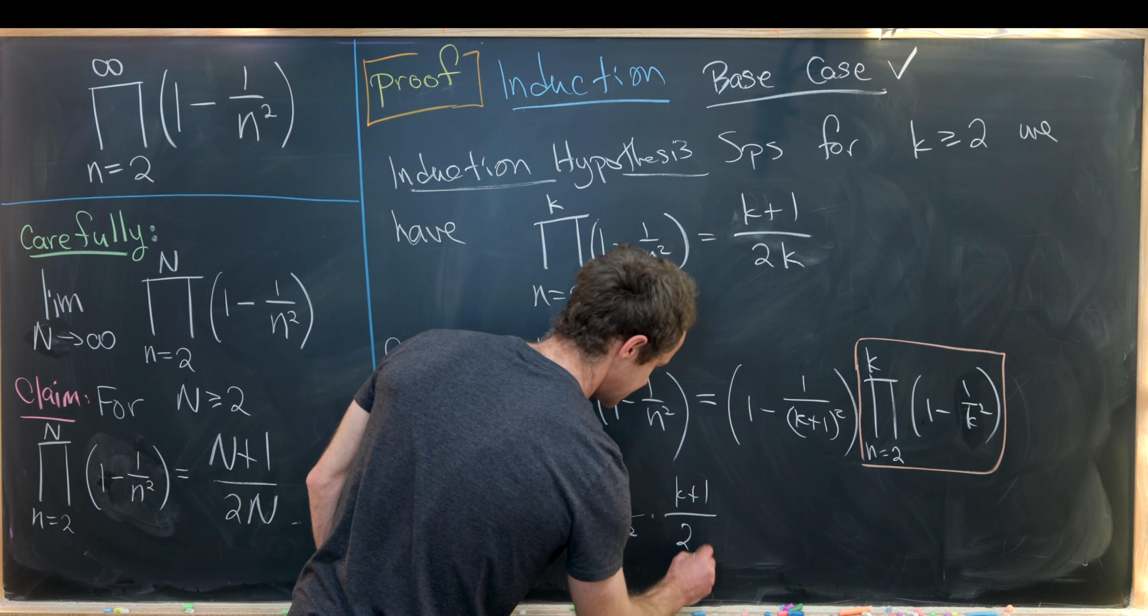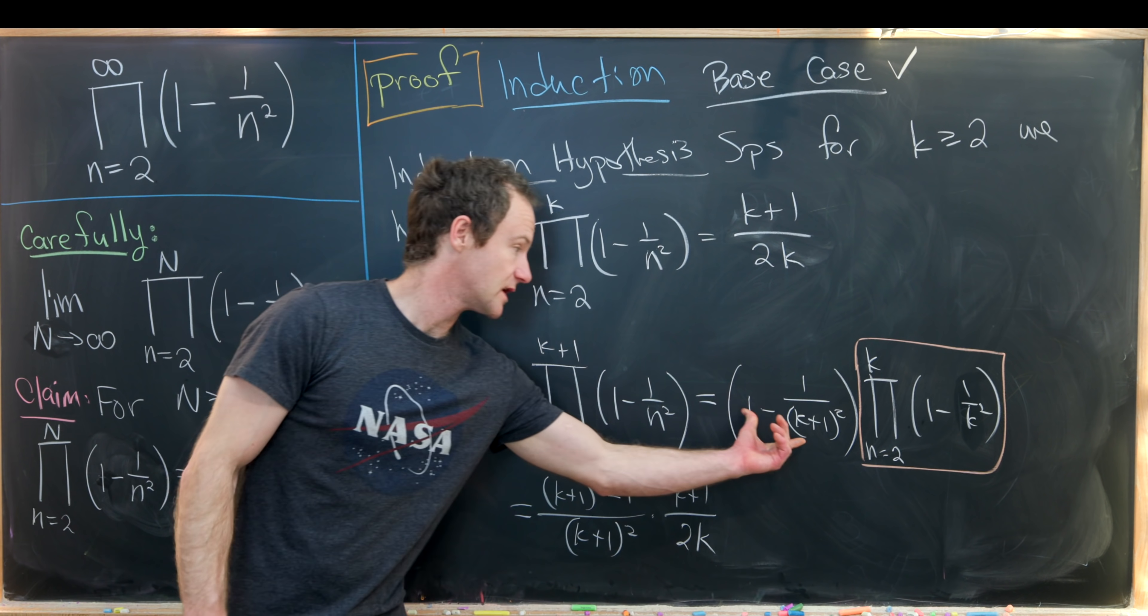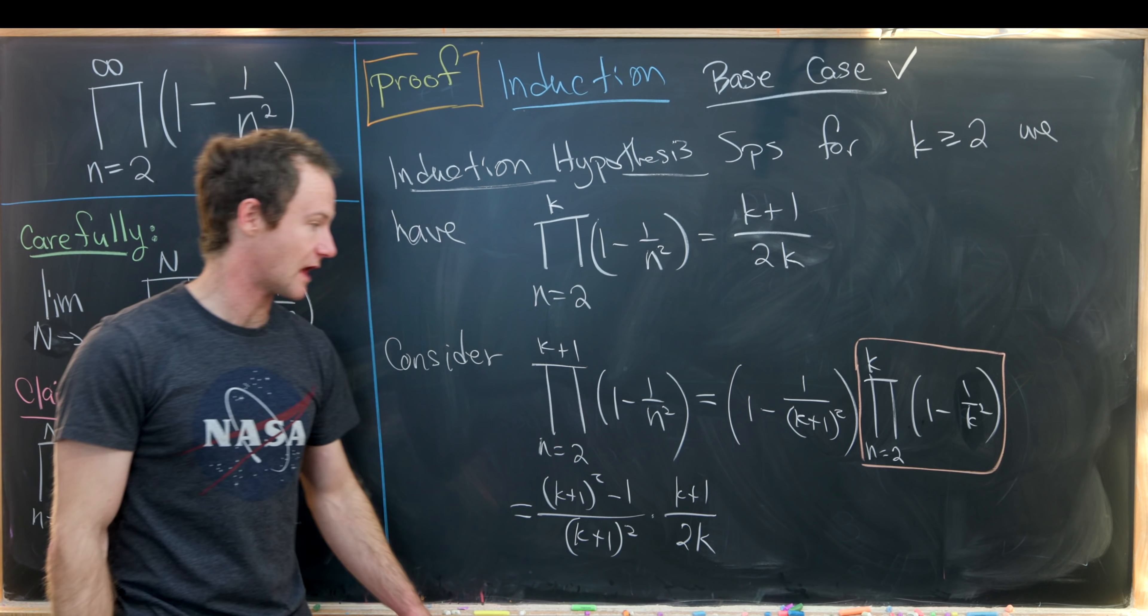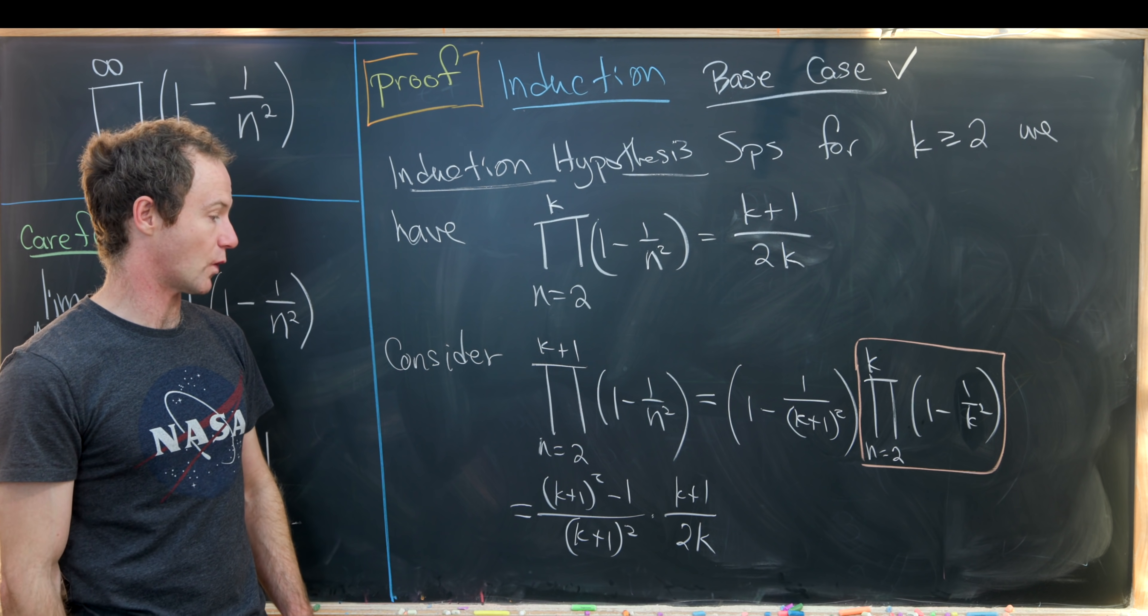and rewrite it as k plus 1 squared minus 1 over k plus 1 squared times k plus 1 over 2 times k. So that's what we have after, again, combining this using a common denominator, and then applying the induction hypothesis on this squared term.